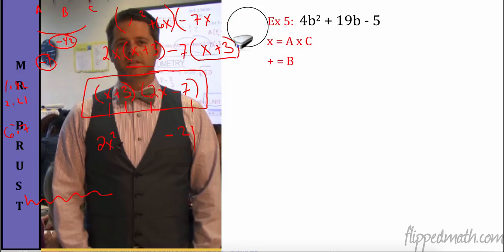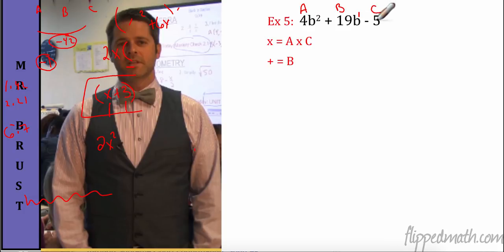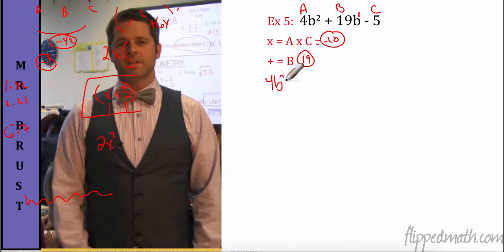Now let's factor 4b² + 19b − 5. In standard form, A goes with the squared term, B with the linear term, and C with the constant. A times C: 4 times negative 5 is negative 20. So I need two numbers that multiply to negative 20 and add to positive 19. I'll rewrite as 4b² + [two terms] − 5.